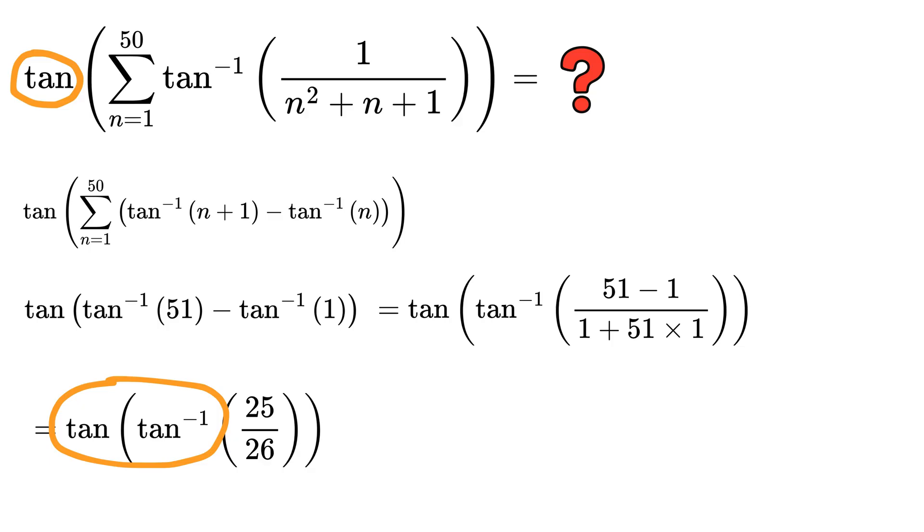So if we take the tangent of this tangent inverse, both of them cancel each other and we simply get this value, which is 25 over 26, and that's our final answer.